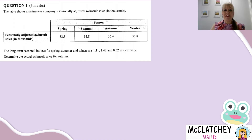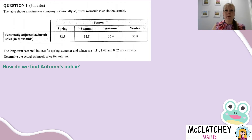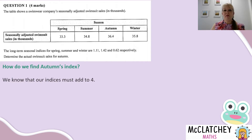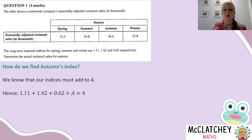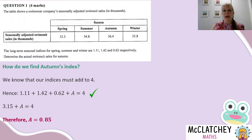Firstly, you need to have a bit of an understanding of what seasonally adjusted means — it actually means de-seasonalized. We need to find autumn's index to be able to work backwards and find the actual results. Our indices must add to 4 because there are four quarters. So 1.11 plus 1.42 plus 0.62 plus A (a variable for autumn) equals 4. So 3.15 plus A equals 4, therefore A equals 0.85. That's our seasonal index for autumn, and that was our second mark out of four.